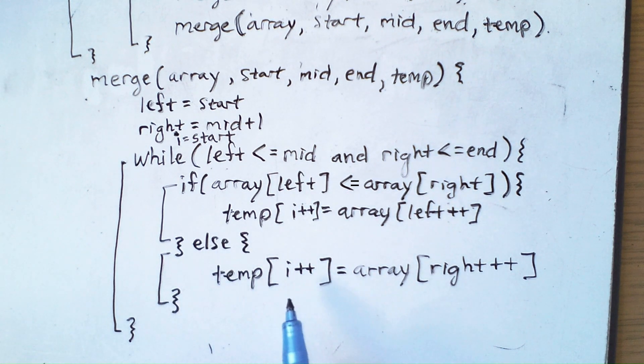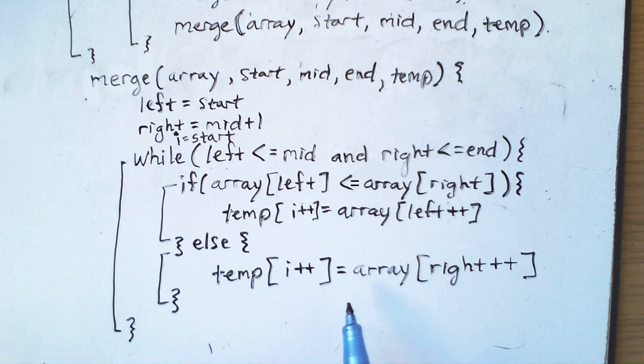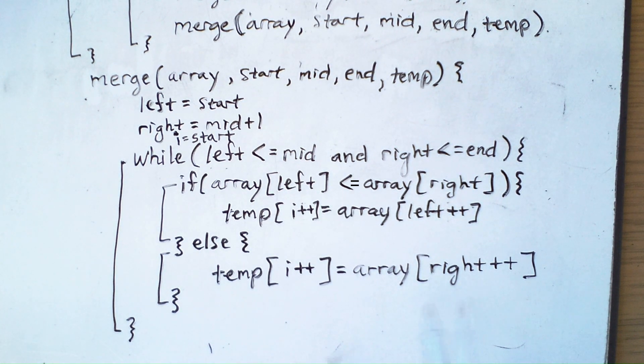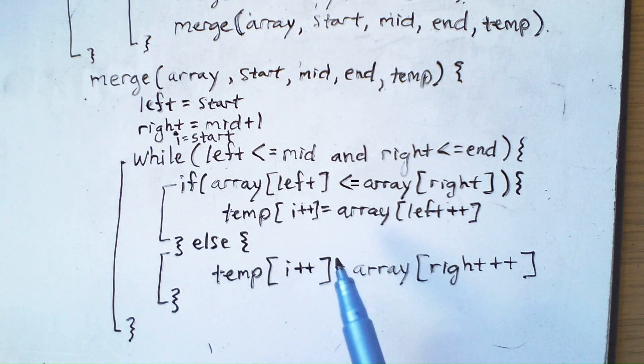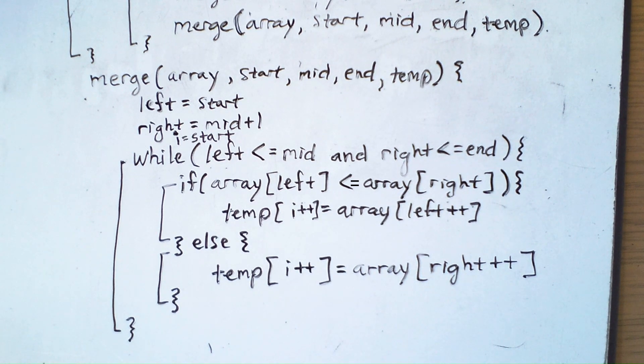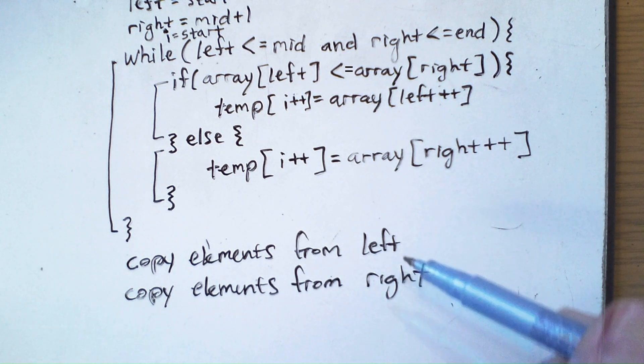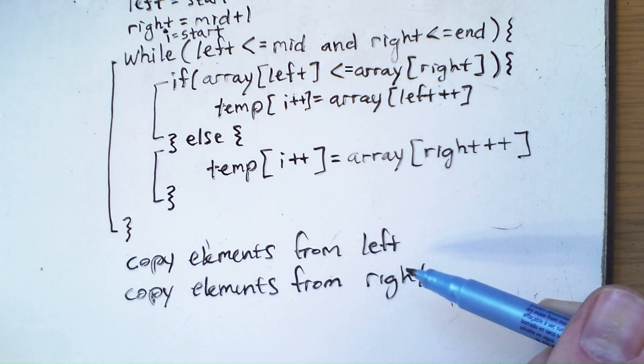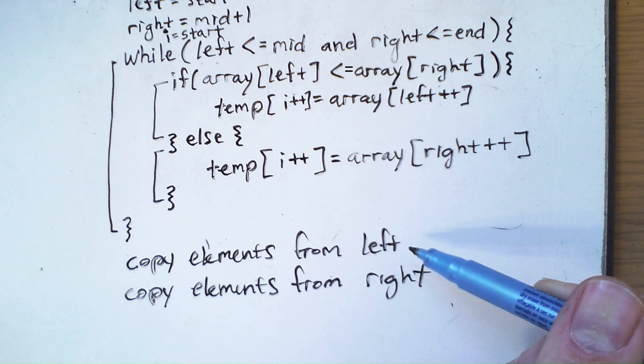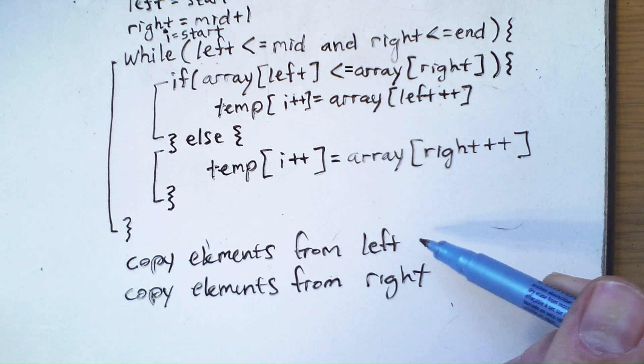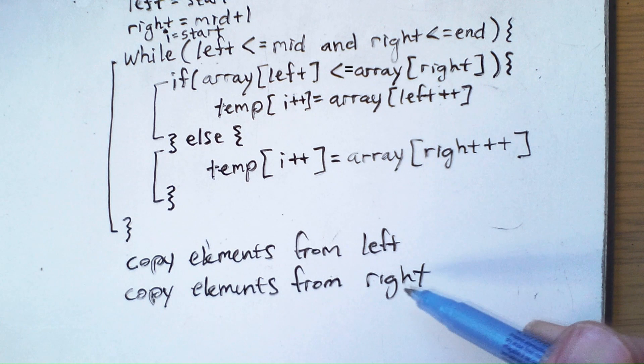So this will give us a situation where until one of these reaches the end of its subarray, we copy elements over. But we're not done yet because this while loop stops as soon as one of these reaches the end. That means we still have some elements left to copy. We can copy any remaining elements from the left, then we copy any remaining elements from the right. Note that only one of these two halves will have remaining elements. But if we implement these with loops, one of the loops will just fail immediately because it's done. And then the other loop will copy all the remaining elements.